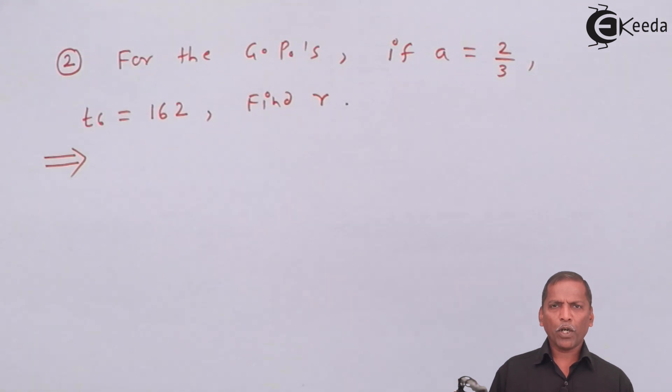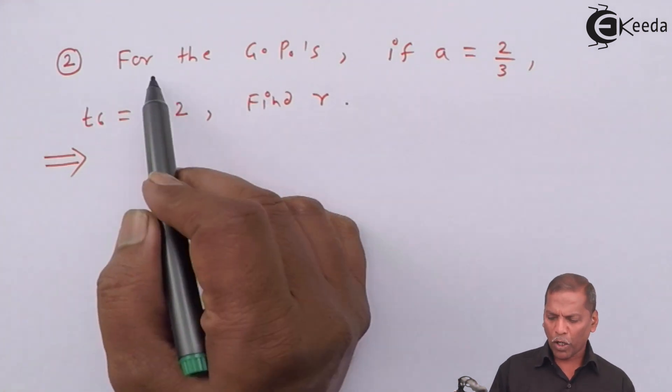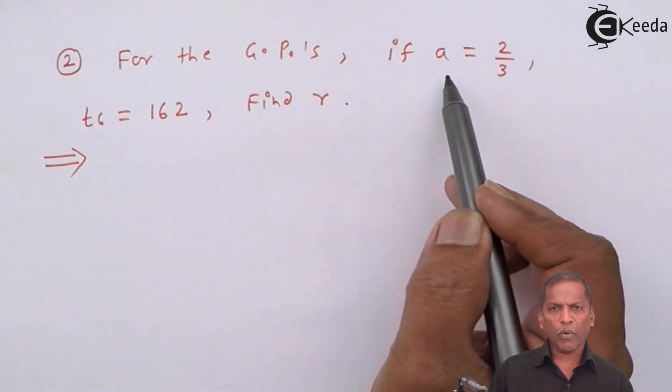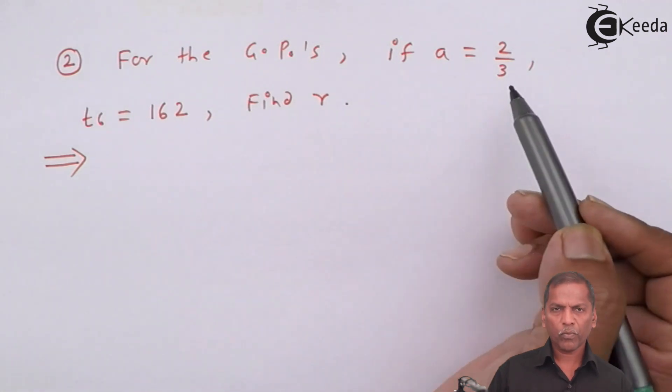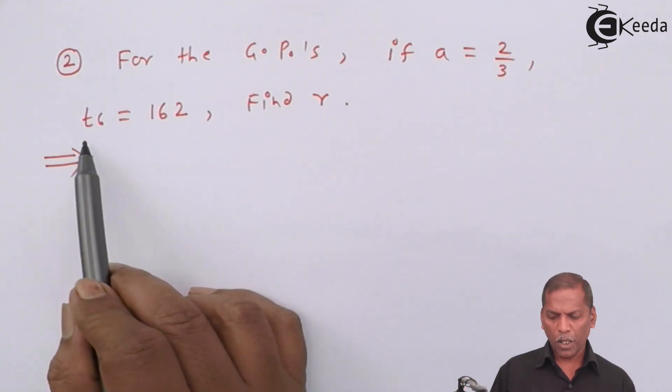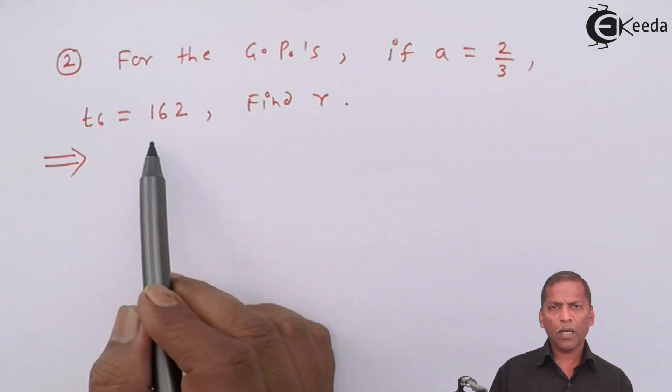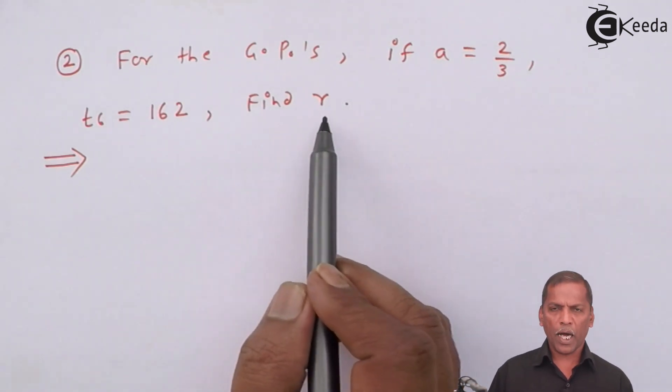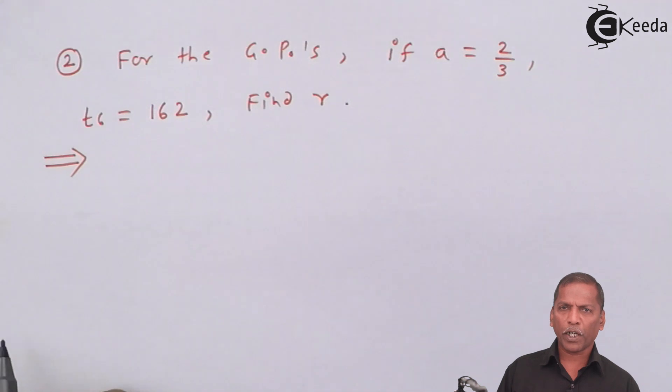Problem number 2 is for the GP. If A equals 2 upon 3, T6 equals 162, then we have to find R, that is the common ratio.